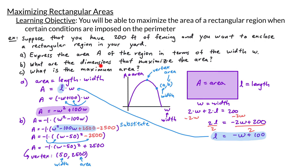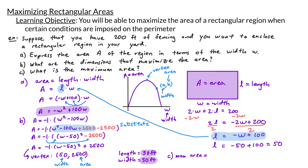For part B, we need the dimensions, so we also need to find the length. Using our earlier relationship L equals negative W plus 100, and substituting W equals 50, we get L equals negative 50 plus 100, which gives L equals 50. So the length is 50 feet and the width is 50 feet — it turns out that when we maximize the area, our region is not only a rectangle but actually a square. For part C, the maximum area is 2500 square feet.